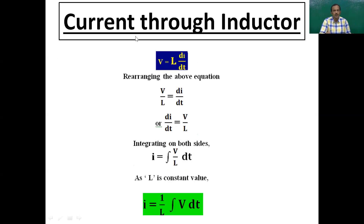Based on v = L di/dt, we can derive the current through the inductor. Rearranging: di/dt = v/L. Integrating both sides, we get another important equation: i = (1/L) ∫v dt. So once we know the voltage across the inductor, we can find the current by integrating, with L being a constant that comes outside the integral.